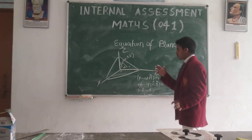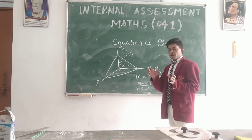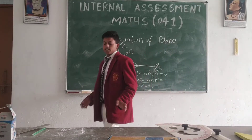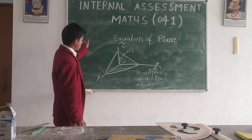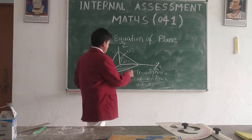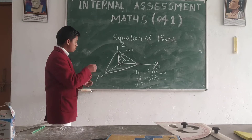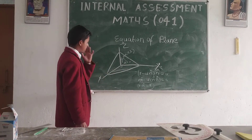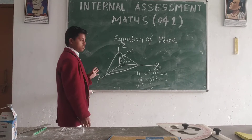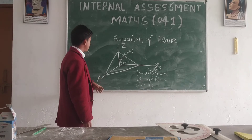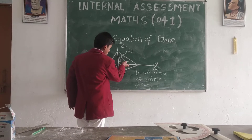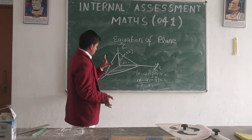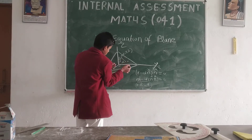We need to know the equation of the plane and the line equation. If the plane is given to us, we need to know the distance. This is the normal distance.